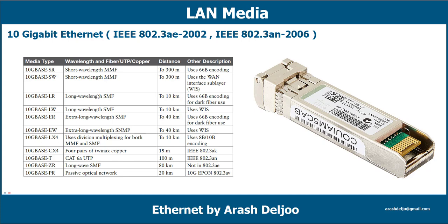Half duplex operation and repeater hubs do not exist in 10 Gigabit Ethernet. The standard encompasses a number of different physical layer (PHY) standards. A networking device such as a switch or NIC may support different physical types through pluggable modules such as SFP+. Like previous Ethernet versions, 10G can use either copper or fiber cabling. Maximum distance over copper cable is 100 meters, but higher-grade cables are required due to bandwidth requirements.